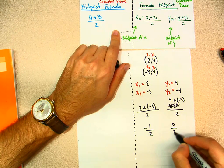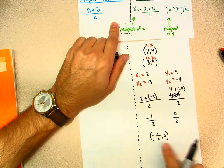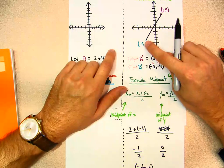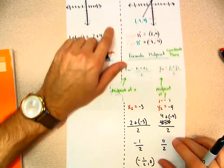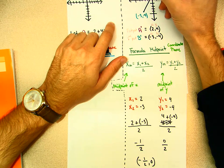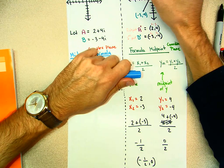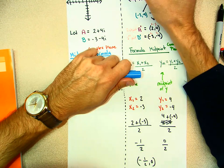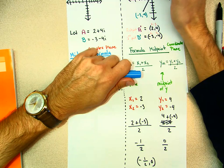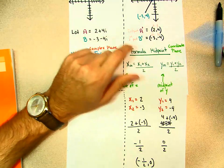My midpoint is (−1/2, 0). This represents the midpoint of this line — I need to go one-half to the negative and zero, so it should be right over here. That point is (−1/2, 0), and it's okay to have a fraction as a point even though we're not quite used to it.